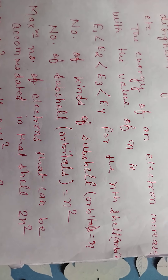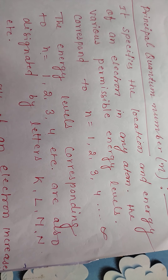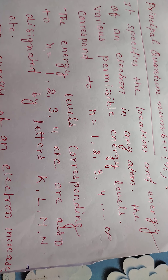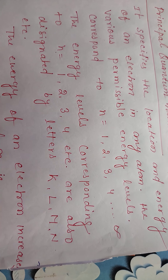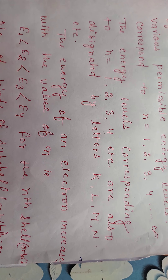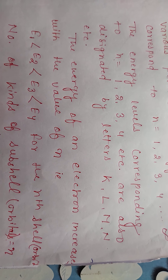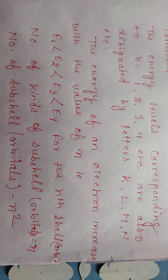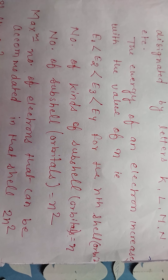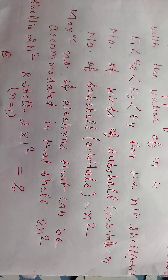To summarize, the principal quantum number specifies the location and energy of electrons in any atom. The permissible energy levels correspond to n equal to 1, 2, 3, 4, etc., also designated as K, L, M, N shells. The energy of an electron increases as n increases, so the highest energy is E4, followed by E3, E2, and E1. The maximum number of electrons in a shell is 2n squared.